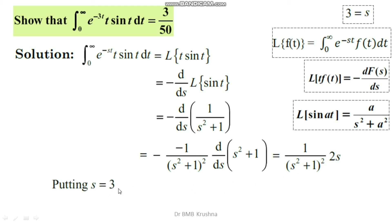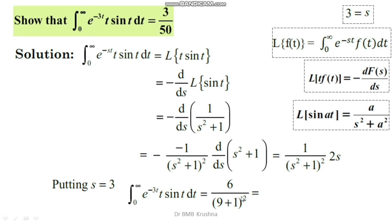Putting s = 3, since the improper integral is from 0 to infinity of e^(−3t) · t · sin(t) dt, the result equals 2 × 3 divided by (3² + 1)², which is 6 divided by (9 + 1)², that is 6 divided by 10², which is 6 divided by 100. Simplifying, 6/100 = 3/50. Hence, we have shown that this improper integral equals 3/50.